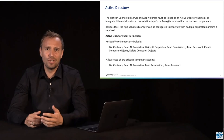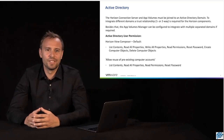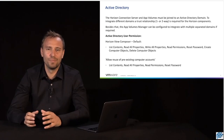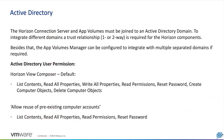When we talk about those services, we depend on all kinds of vSphere and Horizon components. One very important aspect is Active Directory. The Horizon connection server and App Volumes must be joined to an Active Directory domain. If we want to integrate multiple domains with each other, we require a one or two-way trust relationship to give users of another domain access to a certain Horizon instance in our environment.